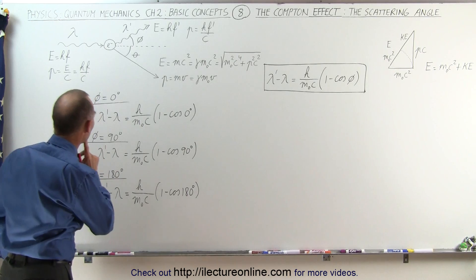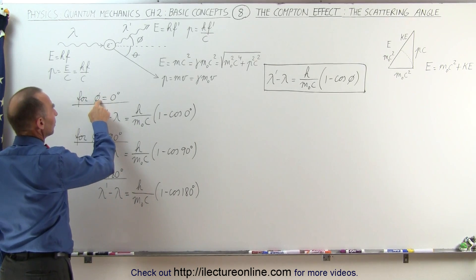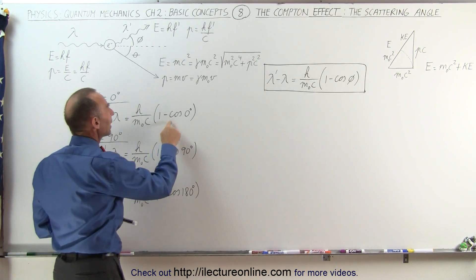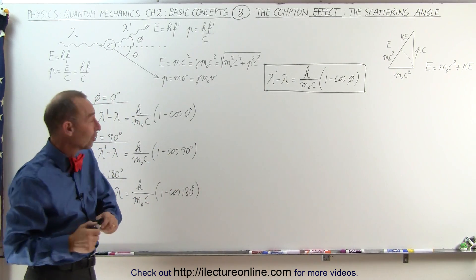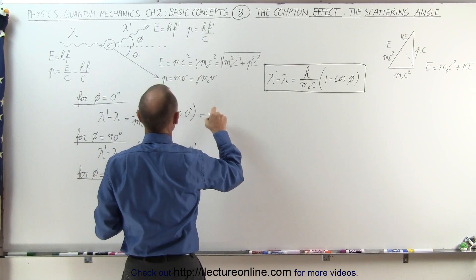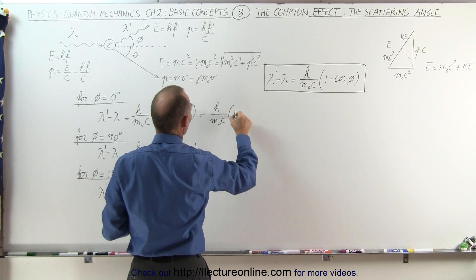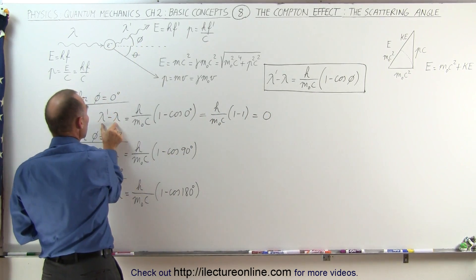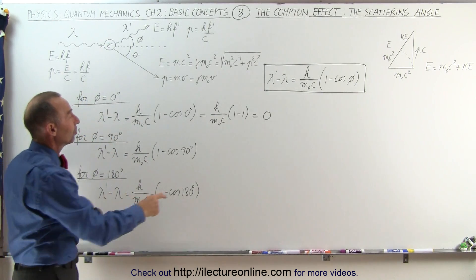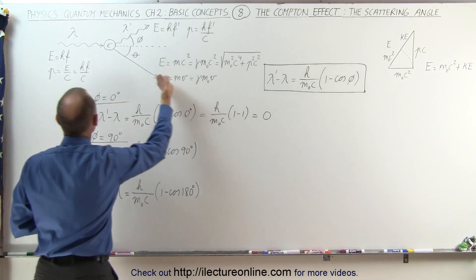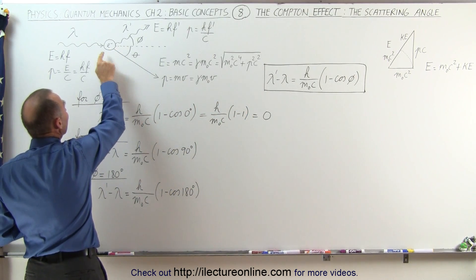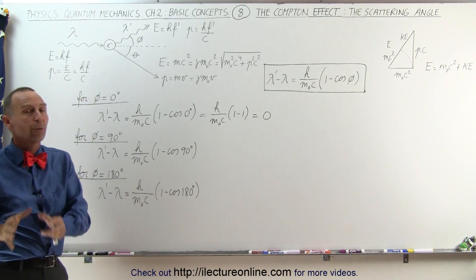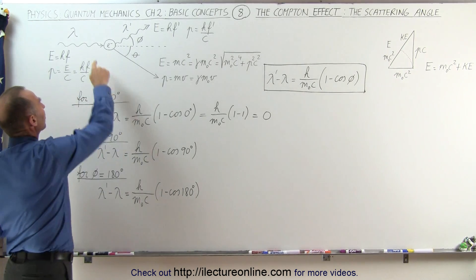What does that mean? Let's take a closer look. If the scattering angle is zero, then we can see that the change in the wavelength is equal to h over m-naught times c times one minus the cosine of zero. The cosine of zero is equal to one, which means this is equal to h over m-naught c times one minus one, or equal to zero. If the scattering angle is zero, there's no change in the wavelength because no energy was imparted to the electron — the photon just keeps on going, meaning there was no interaction between the photon and the electron.